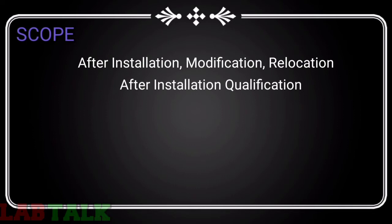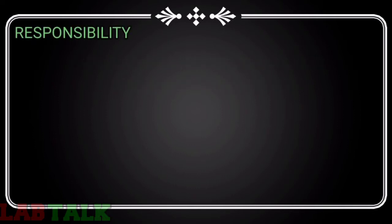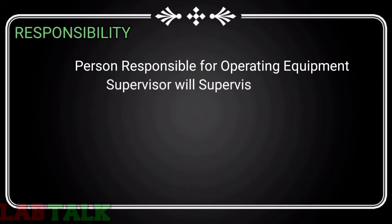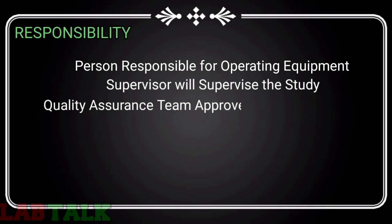The responsibility lies with the person responsible for operating the system or equipment, who will perform the qualification and record the information. Supervisors will supervise the study, complete the records, write the deviation report, and the operational qualification report. The quality assurance team will review and approve the OQ protocol and report.